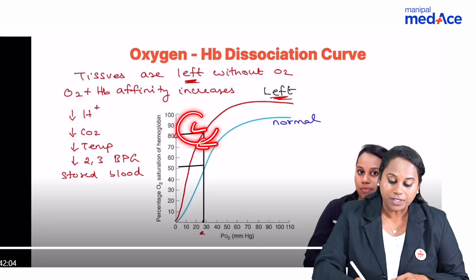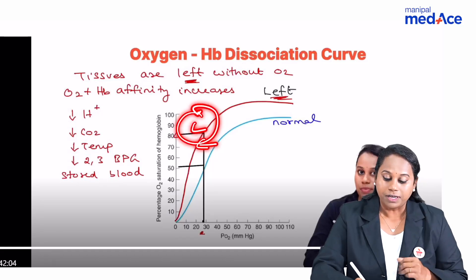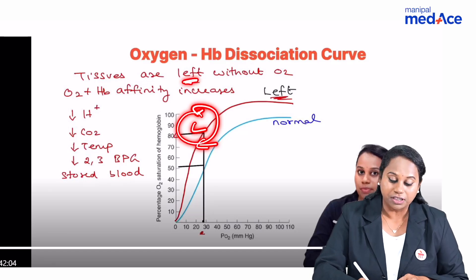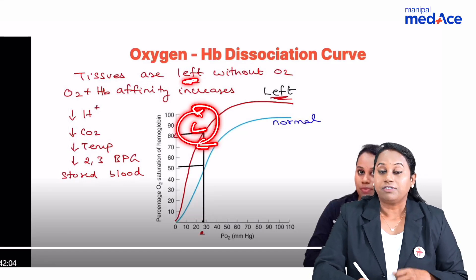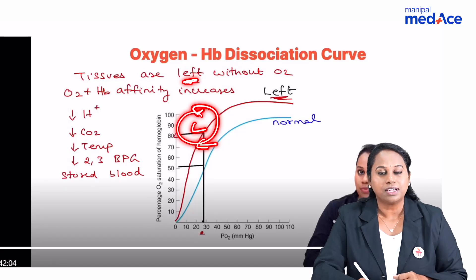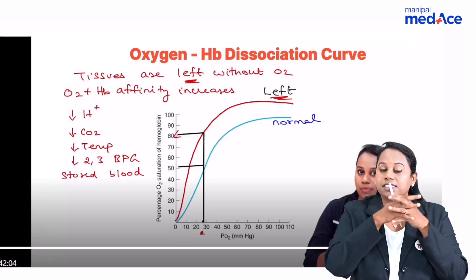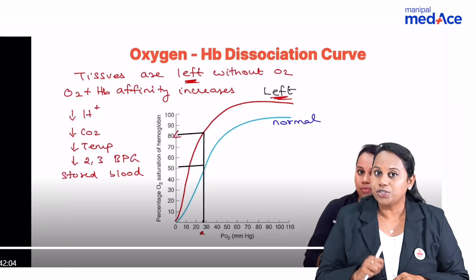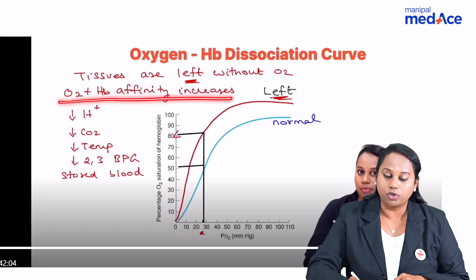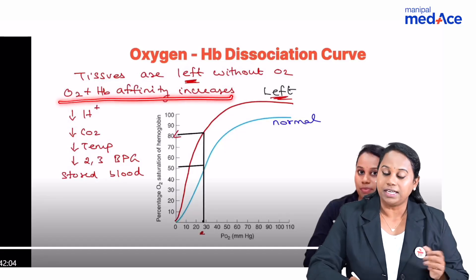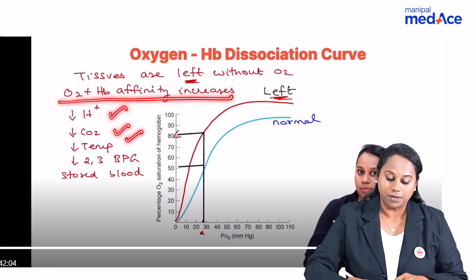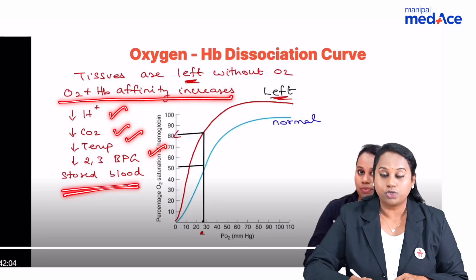Left shift of the curve means tissues are left without oxygen — hemoglobin is holding all the oxygen and not releasing it to the tissue. Oxygen-hemoglobin affinity is more in left shift. Causes of left shift include decrease in H+, decrease in CO2, decrease in temperature, decrease in 2,3-BPG, and stored blood.